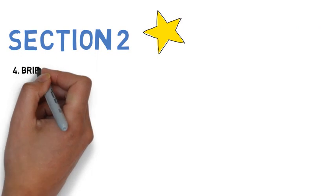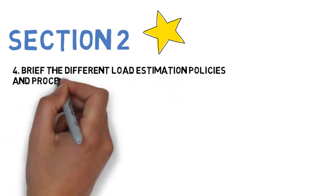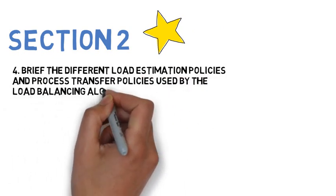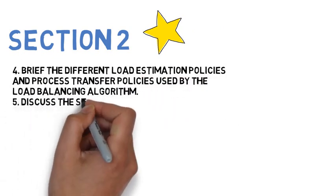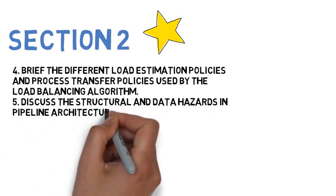Let's go to Section 2, wherein the first is brief the different load estimation policies and process transfer policies used by load balancing algorithms. Next is discuss the structural and data hazards in pipeline architecture, discuss any one control or mitigation of them in detail.